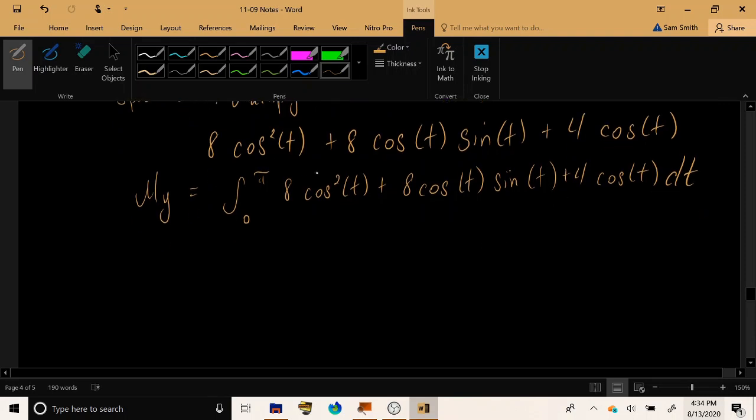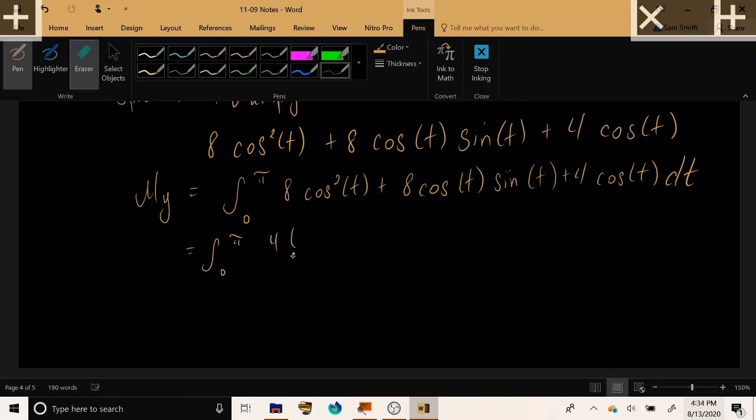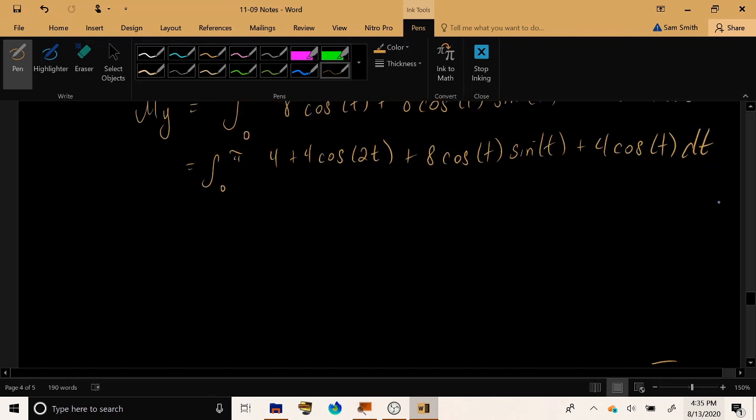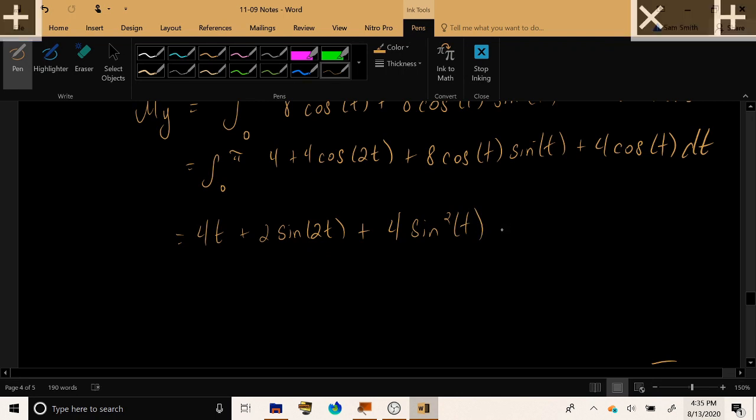So, once again because of this cosine squared we're going to need to use the trig identity where this is equal to 1 plus cosine 2t divided by 2, then rewrite all the other terms and then we can take the antiderivative and we have 4t plus 2 sine 2t. If we apply a u substitution with u equals sine we can think of this as 4 sine squared t and then finally plus 4 sine t evaluated as t goes from 0 to t equals pi.